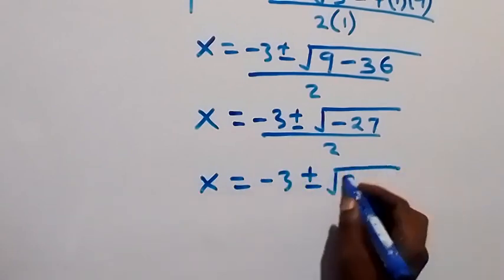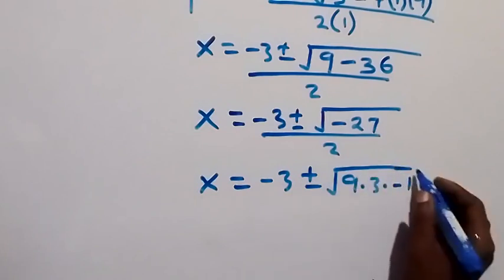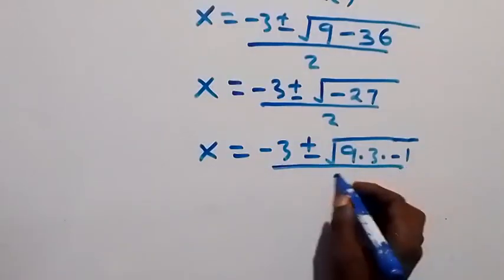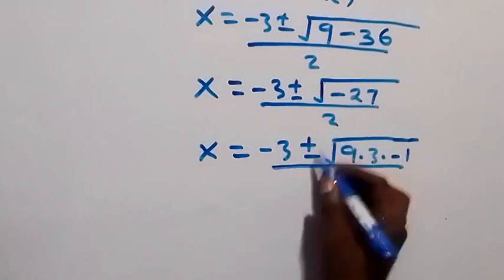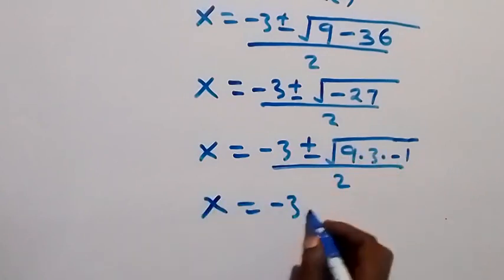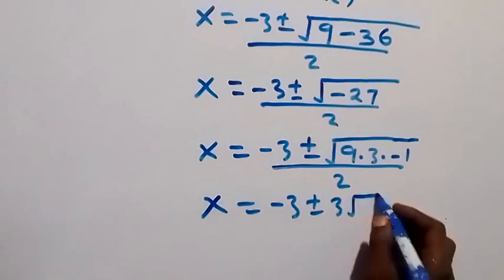And of course this is divided by 2. Then square root of 9 is 3, we can take that out. We have x = -3 ± 3√3,